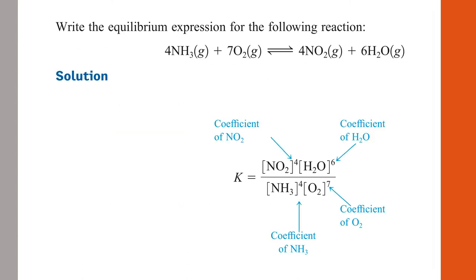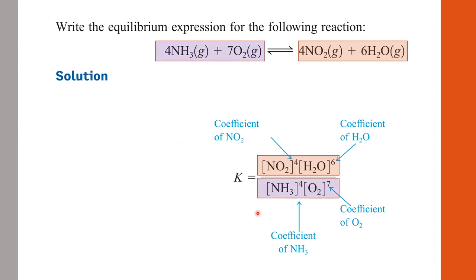Here is an example. If asked to write the equilibrium expression for a given reaction, the Kc expression places the concentration of products on top and concentration of reactants below, using square bracket molarity notation. We do not need to write the state of matter in the Kc expression. Remember to raise each concentration to its stoichiometric coefficient — for example, 4 for nitrogen monoxide, 6 for water, 4 for ammonia, and 7 for oxygen.